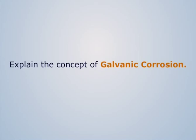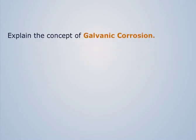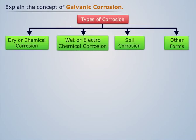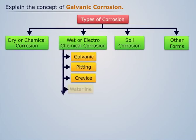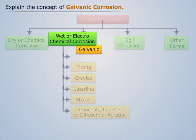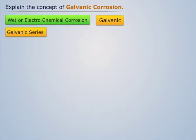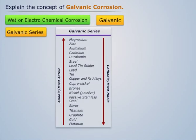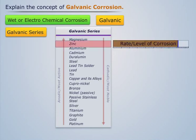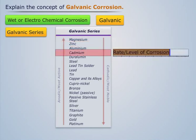We have studied that wet corrosion is further classified, and here we'll be discussing galvanic corrosion. But before that, let us first discuss the galvanic series. It is a reliable series for predicting corrosion behavior of metals and alloys in different environments. Basically, the extent of corrosion depends upon the position of the metal in the galvanic series.